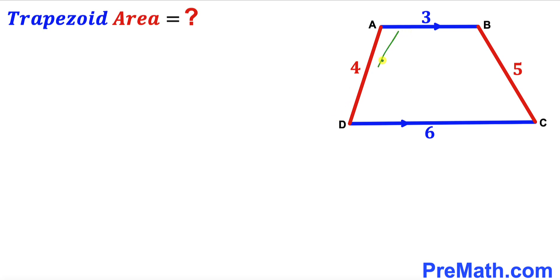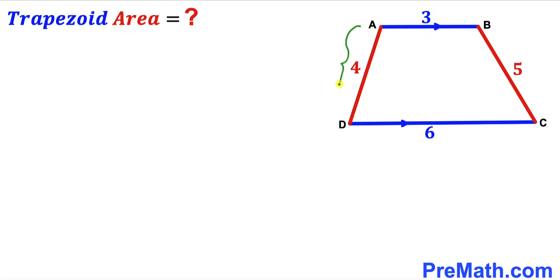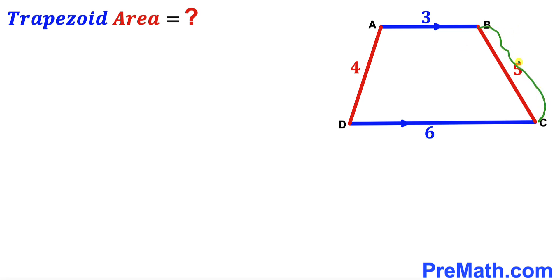Welcome to pre-math. In this video we have got trapezoid ABCD such that side AB is 3 units, side AD is 4 units, side CD is 6 units, and side BC is 5 units. Base AB is parallel to base CD, and our task is to calculate the area of this trapezoid ABCD.